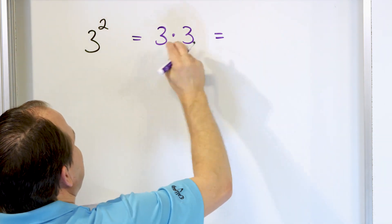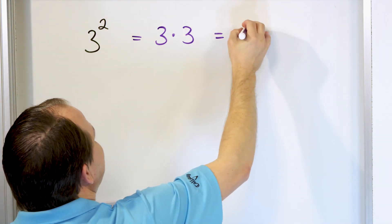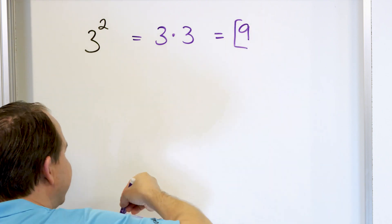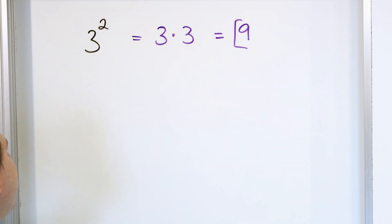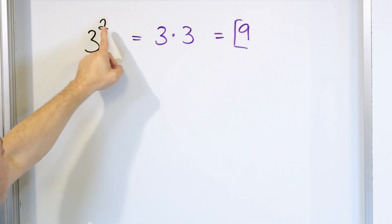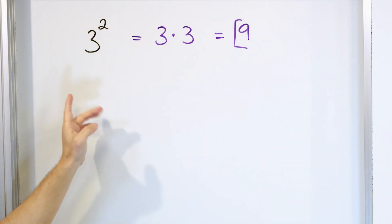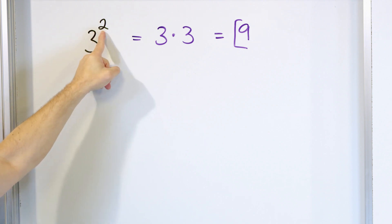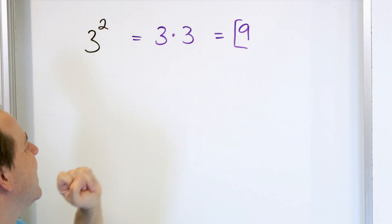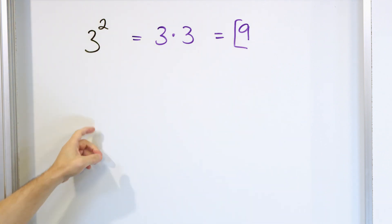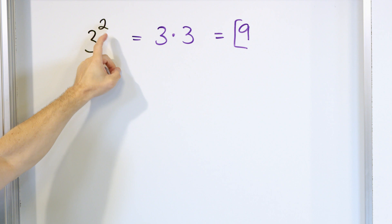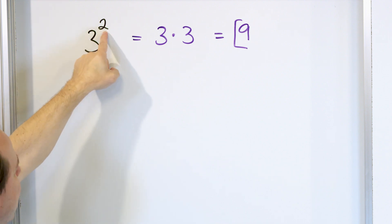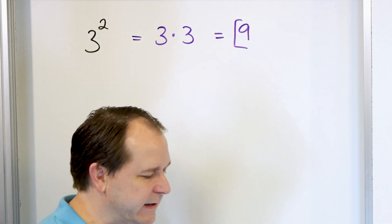So what is 3 times 3? 3 times 3 is 9. So we can say that 3 to the power of 2 is 9. We can also call it 3 to the exponent of 2 is 9. And because 2 is a special exponent, we say 3 squared is 9.